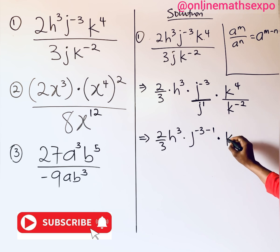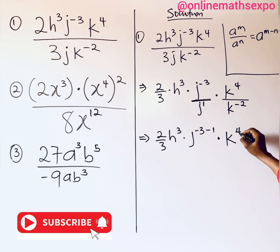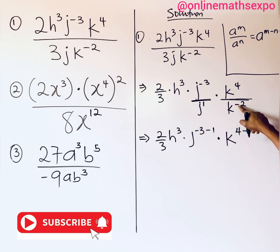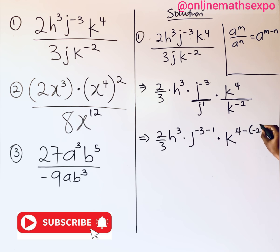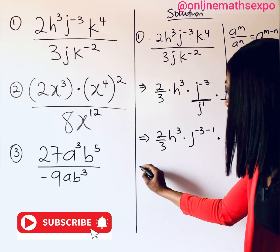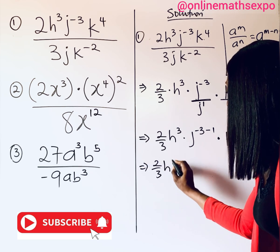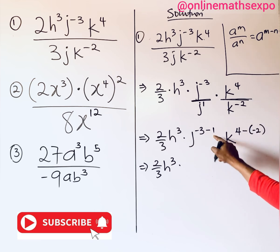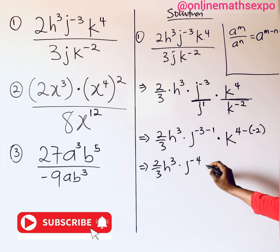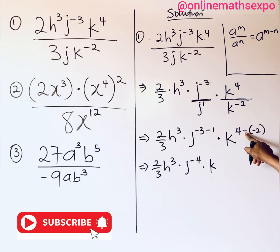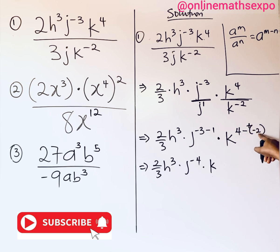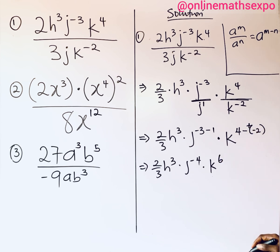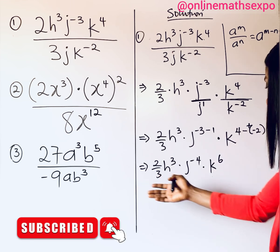For k, we have k to the power of 4 over k to the power of negative 2. Division turns to subtraction, but there is already a negative sign, so: 4 minus negative 2 gives us positive 6. So we now have 2 over 3, times h cubed, times j to the power of negative 4, times k to the power of 6.